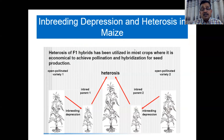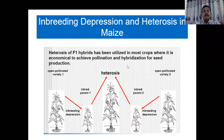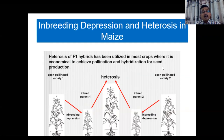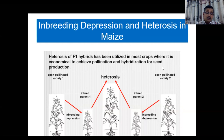Coming to maize — apart from rice, maize has the highest acreage in the world and very high yield potential. Normally in maize, most of the area in developed and developing countries is occupied by hybrids, not composites or synthetics as in earlier days 10 to 20 years back. Still some land races are maintained as composites or synthetics.